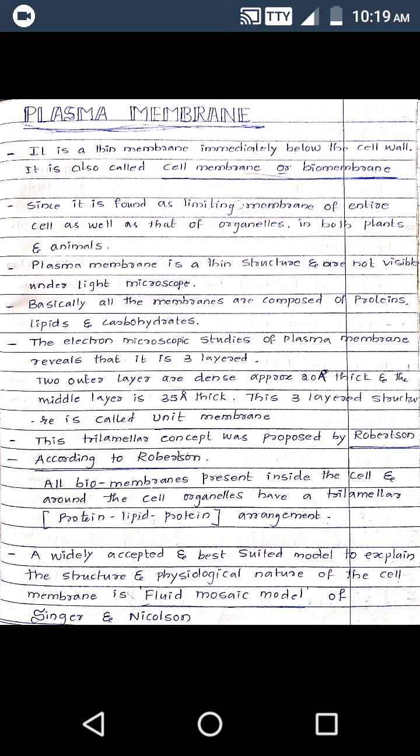Plasma membrane plays a major role in giving protection to the cell. It also plays a major role in homeostasis — that is, it maintains the equilibrium across the cell. Additionally, plasma membrane acts in transporting materials across the membrane. It will allow only some of the components to enter into the cell and to go out of the cell. These are some of the key functions of the plasma membrane.